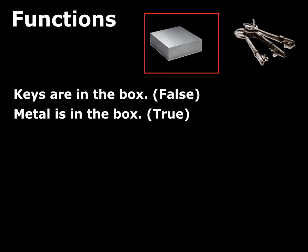Now let's look at this a different way. Here we have keys made of metal, and a block of metal — let's say steel. The red square represents a box. The chunk of metal is in the box, but the keys are not. So 'keys are in the box' is false, and 'metal is in the box' is true.